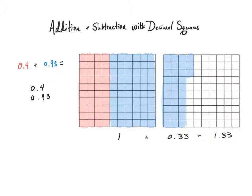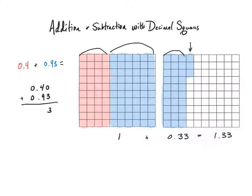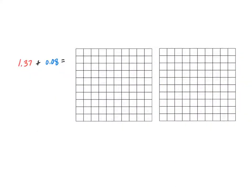Looking back at the original problem: if I line up place values and make equivalent decimals, I have forty hundredths shaded in red and ninety-three hundredths shaded in blue. Three hundredths plus zero hundredths leaves three hundredths. Then nine tenths plus four tenths gives thirteen tenths altogether — I left three of those tenths on one grid and carried over ten of those tenths to the next grid, which gave me one whole. So the answer is one and thirty-three hundredths.